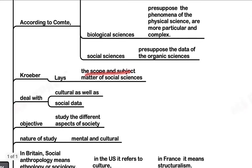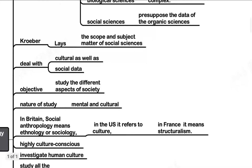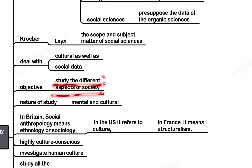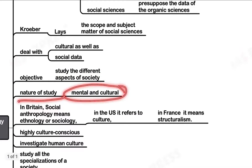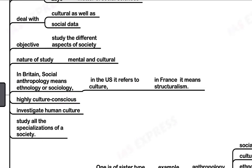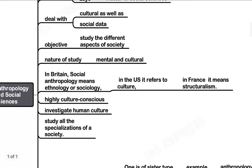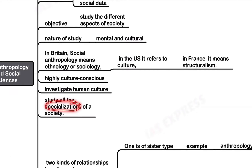Kroeber laid the scope and subject matter of social sciences. According to him, social sciences dealt with culture as well as social data, and the objective was to study different aspects of society — the mental as well as cultural phenomena which involve a society. In Britain, social anthropology means ethnology or sociology; in the US it refers to culture, hence the term cultural anthropology; in France it refers to structuralism. It investigates human culture and studies all aspects of specialization within society.